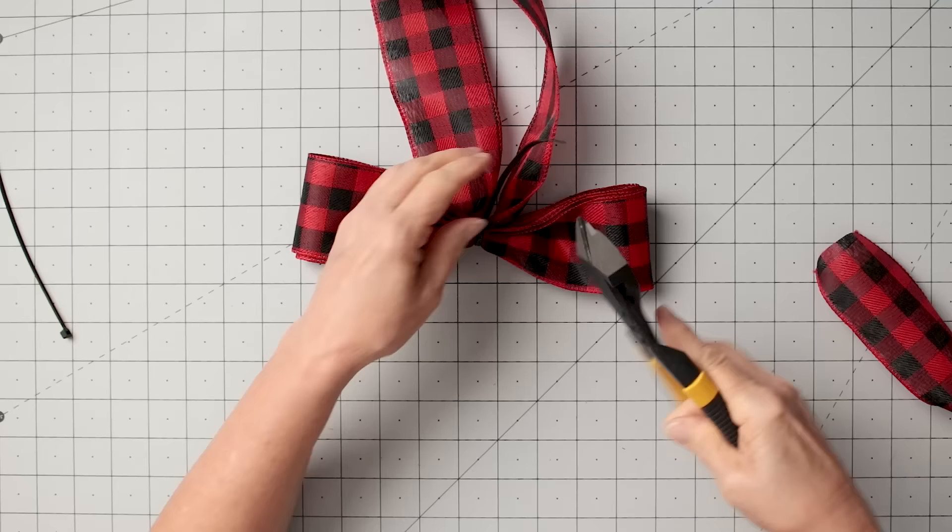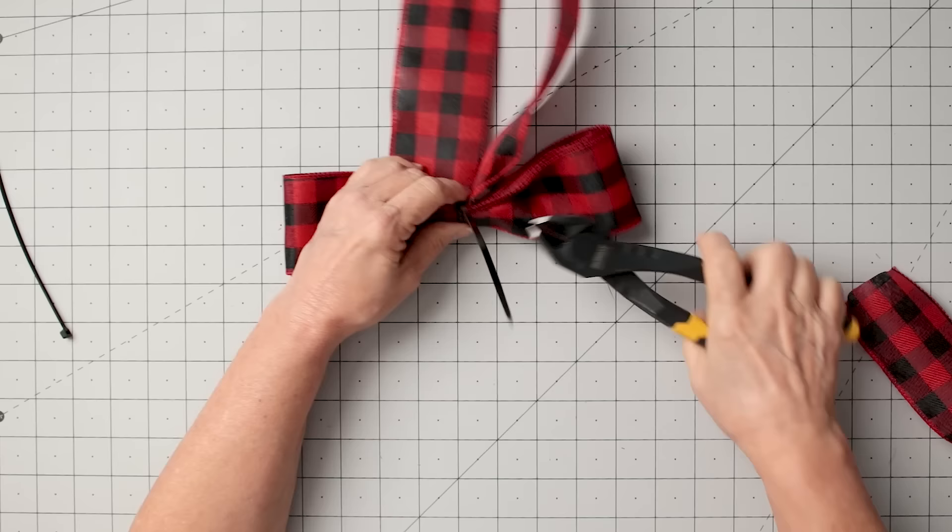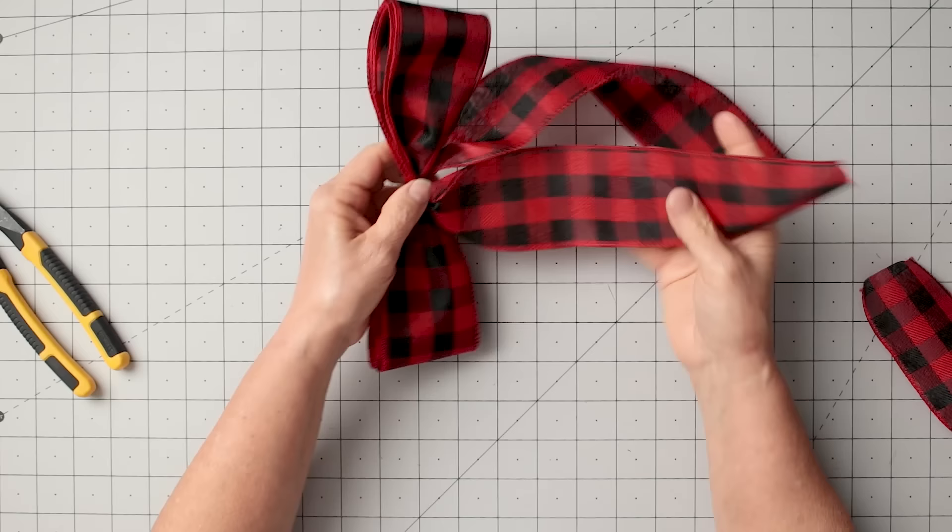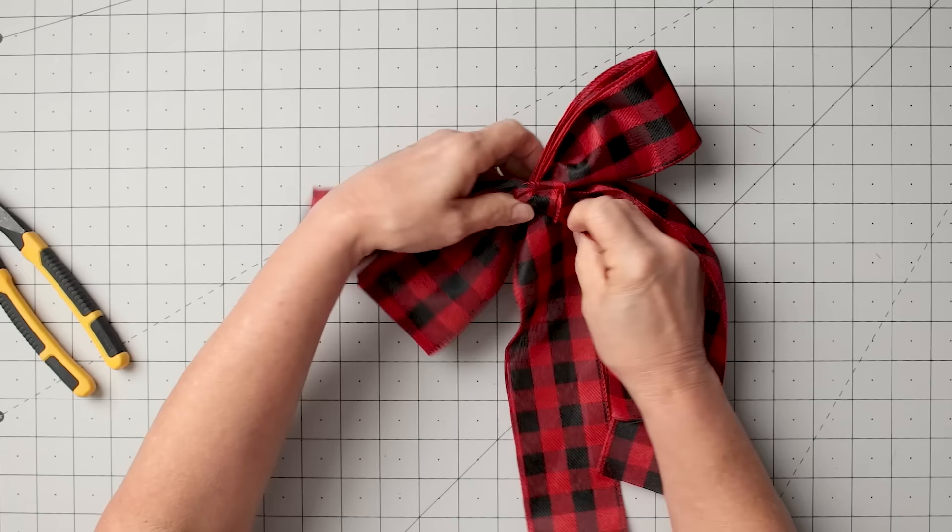Then trim that zip tie. I did pull the zip tie to the back because it does have a little bit of a bump and I wouldn't want that on the front just in case it would peek through. I would make sure it's on the back. I'm using those wire cutters and they are the best. If you craft at all, you definitely want a pair of these, so I will put that list below.